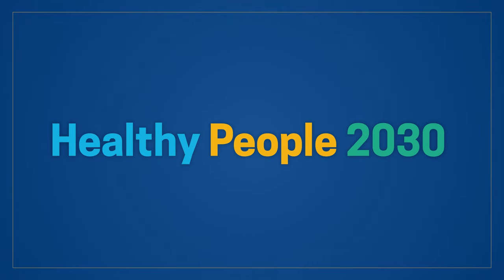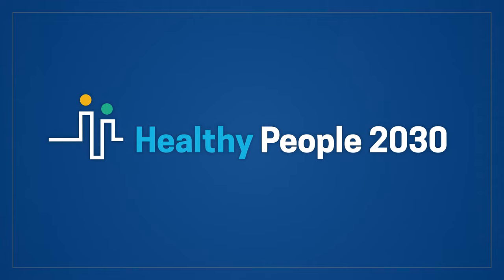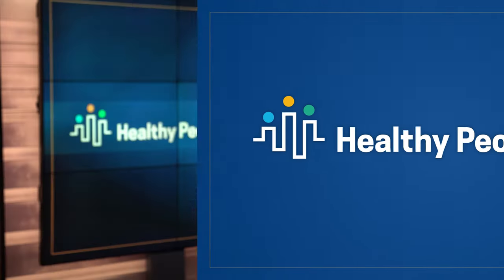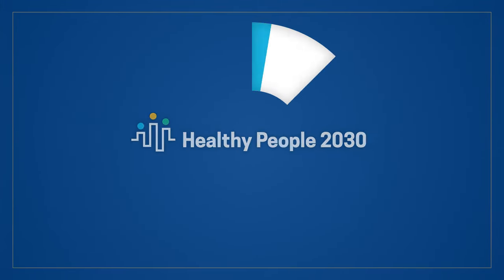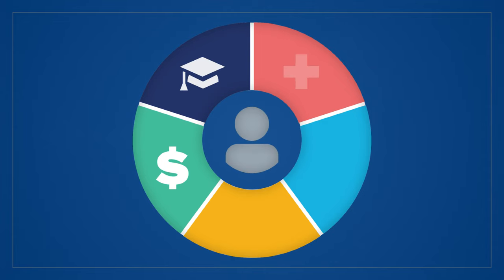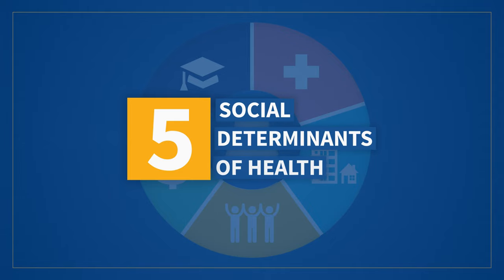Healthy People, our nation's longest-running disease prevention and health promotion initiative, emphasizes addressing the social determinants of health to create environments that promote health and well-being for all. I'm Admiral Rachel Levine, Assistant Secretary for Health at the United States Department of Health and Human Services. Healthy People 2030 provides a framework for thinking about the social determinants of health across five domains. Here are the five social determinants of health.